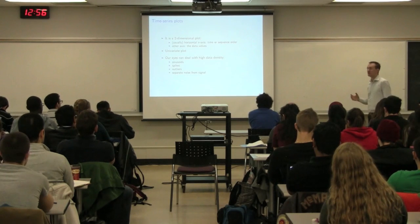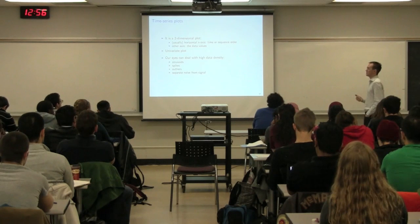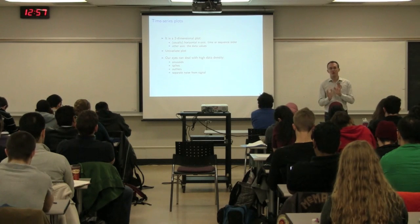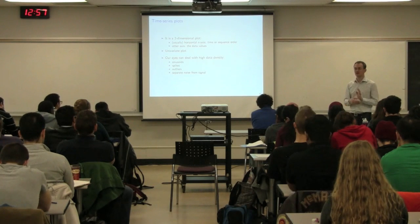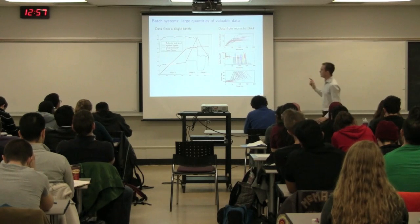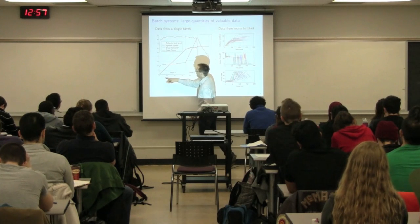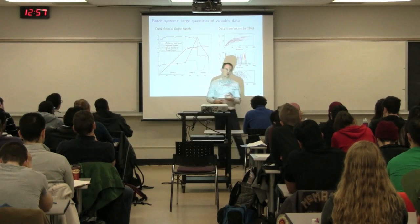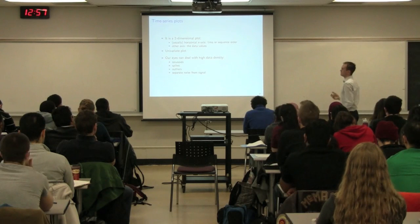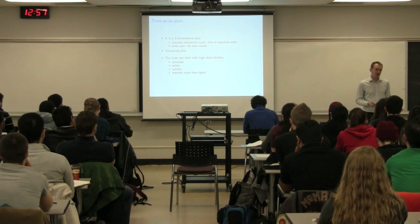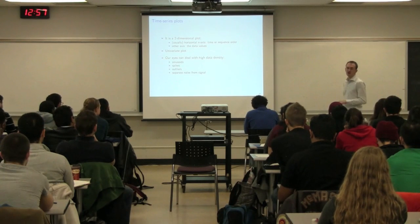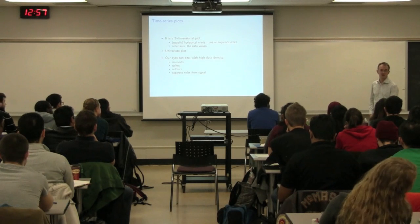The first plot we're going to consider is the most common plot you'll see, especially in a control room — and that's a time series plot. All these plots are two-dimensional with an x- and y-axis, but they're univariate plots. One dimension is the variable of interest, usually the y-axis, and in a time series plot the x-axis is the time scale. If I look at one trajectory — say the tank level — it's a univariate plot where my x-axis is time and my y-axis is the variable's value. We can very quickly pick out unusual shapes and trends. Our eyes are very good pattern recognition engines — we pick out sinusoids, spikes, and outliers, and we can quickly distinguish what's noise and what's the actual signal.